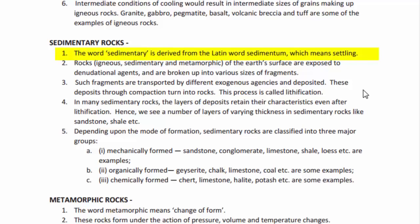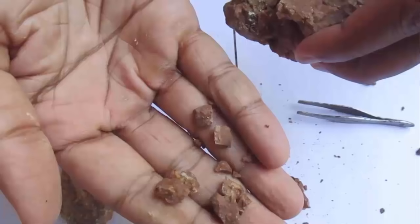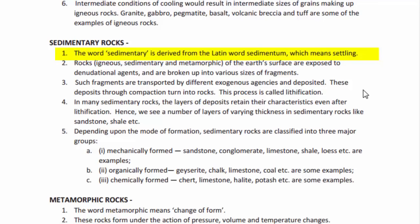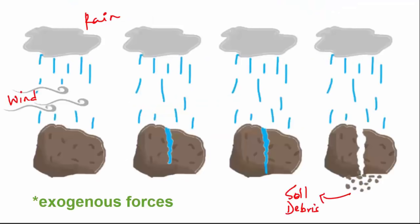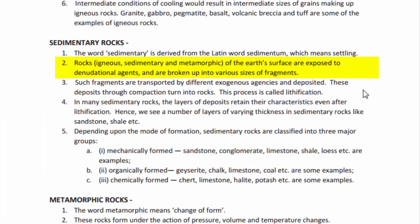The word sedimentary is derived from the Latin word sedimentum, which means settling. Sedimentary rocks can be easily broken down into tiny sediments of mud and soil debris, and they have a tendency to settle down on the earth's surface. Rocks exposed to denudational agents — also called exogenous forces like wind, water, and ice — are broken up into fragments, transported, and deposited. These deposits through compaction turn into rocks, a process called lithification.